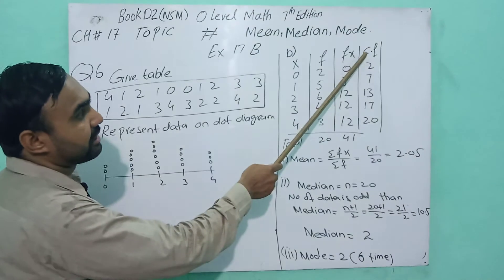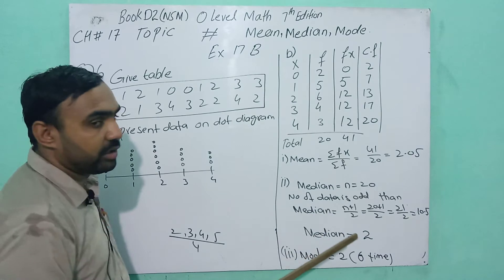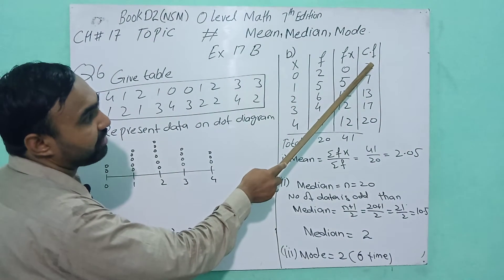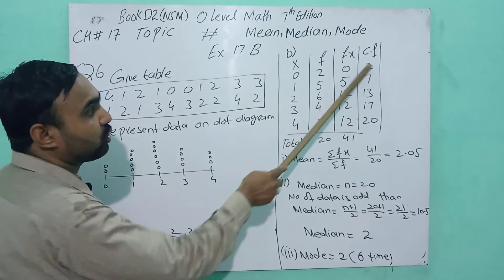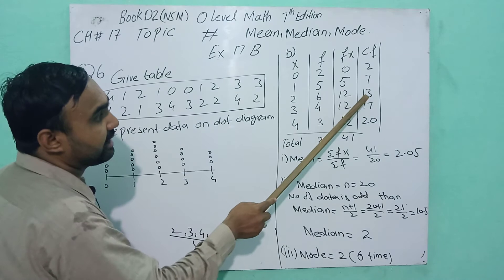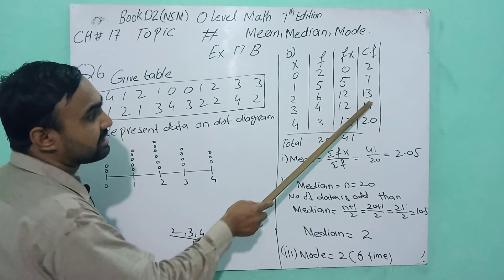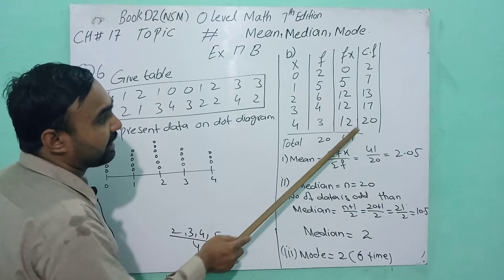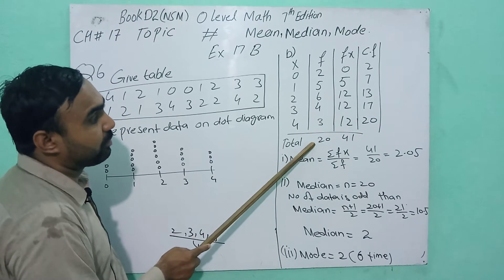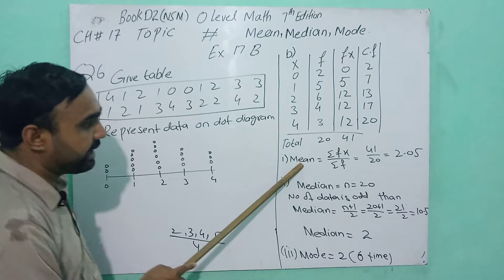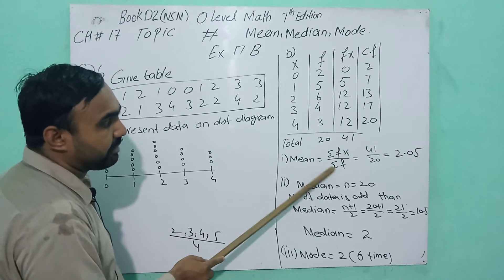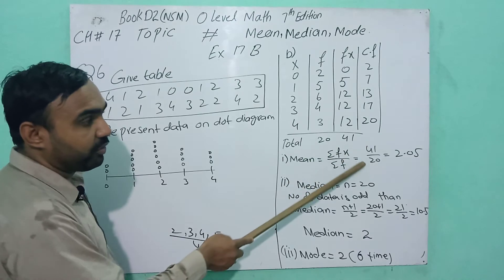Now find the cumulative frequency. Cumulative frequency means: first frequency, then first plus second: 2+5=7, then 7+6=13, 13+4=17, 17+3=20. The cumulative frequency last number and the total number are the same. Mean is Σfx over Σf: 41 over 20 equals 2.05.